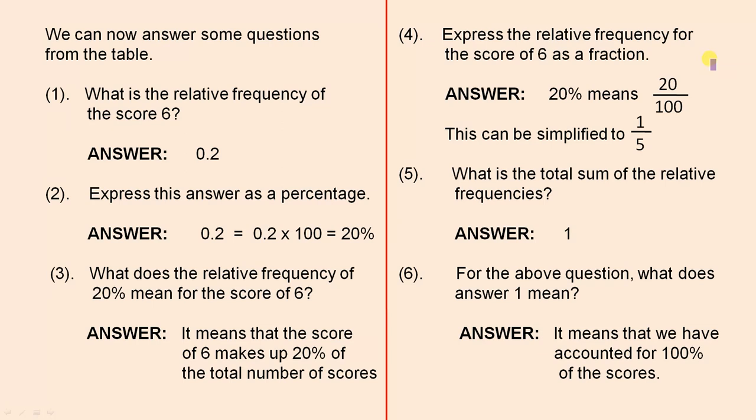Express the relative frequency for the score of 6 as a fraction. 20% means 20 over 100, we know that. When you have percentage, that means out of 100. When you simplify that, you get 1 over 5.